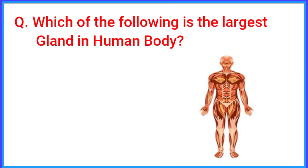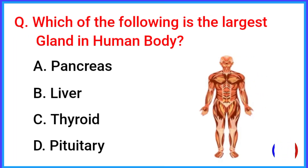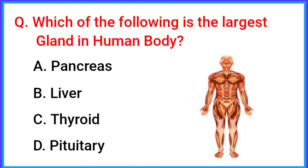Which of the following is the largest gland in the human body? The correct answer is option B: liver.